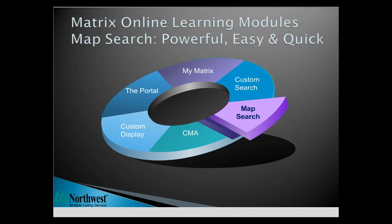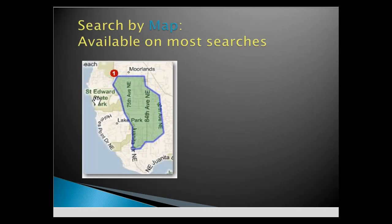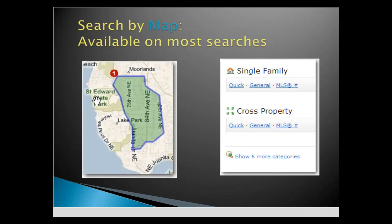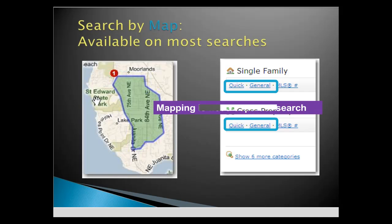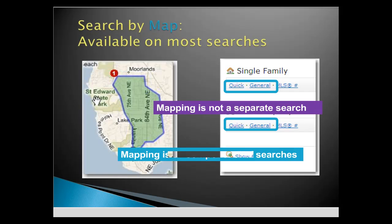Map Search. Powerful, easy, and quick. The ability to search by creating a perimeter on a map is available on most Matrix searches. Whether your preference is for a quick or general search, or using multiple property types, mapping is available to you. Mapping is not a separate search, but a component of most searches.